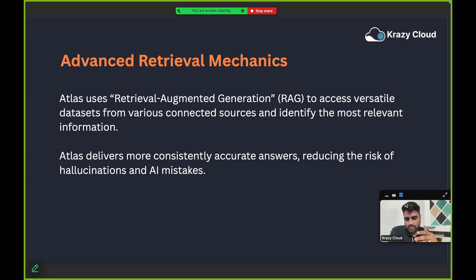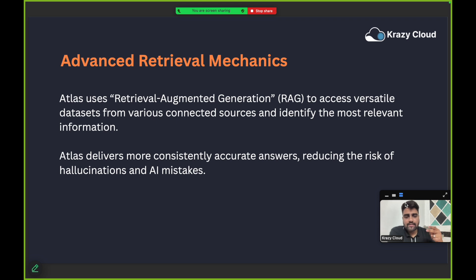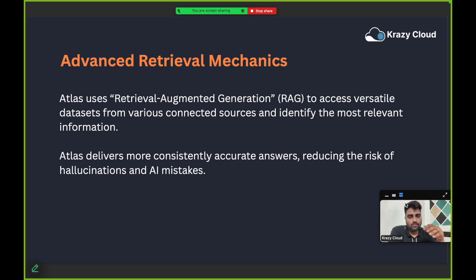The Atlas reasoning engine has advanced retrieval mechanics — whether it is retrieving data from one source or multiple sources, it can still identify which data is most relevant to the user.